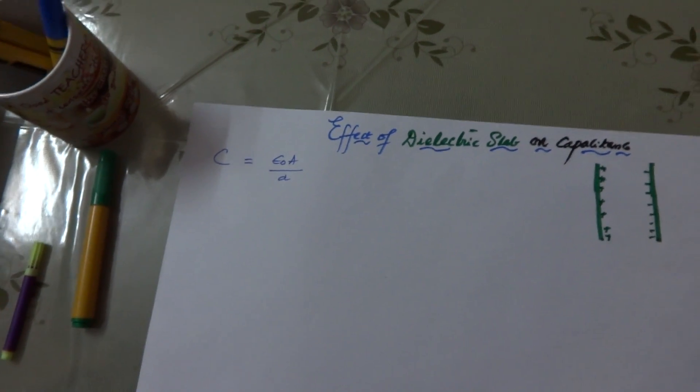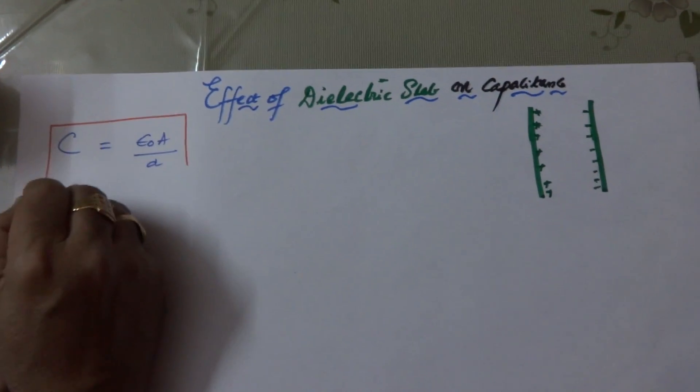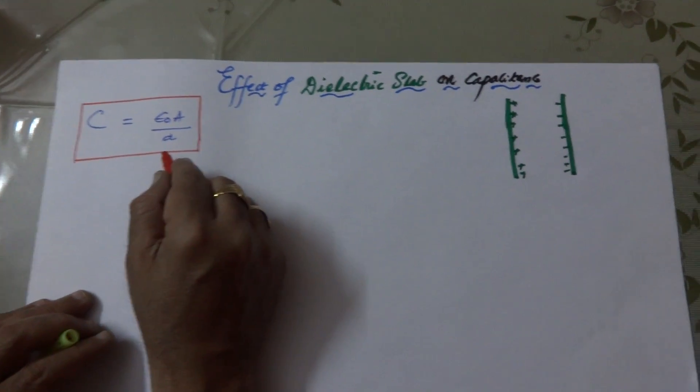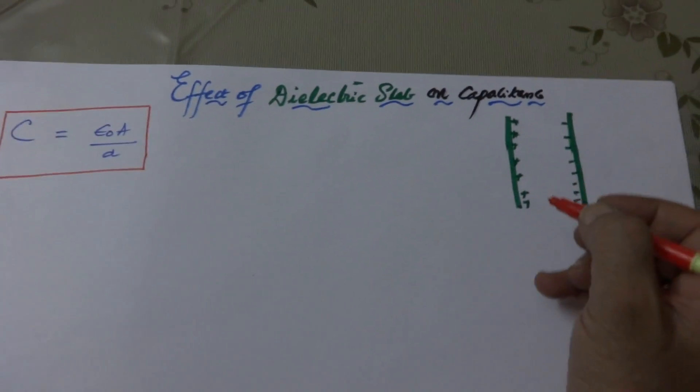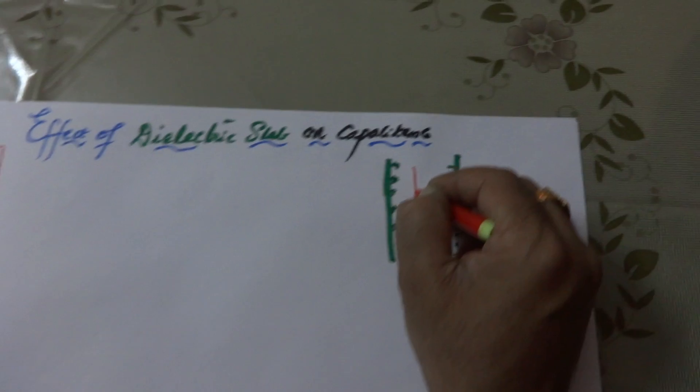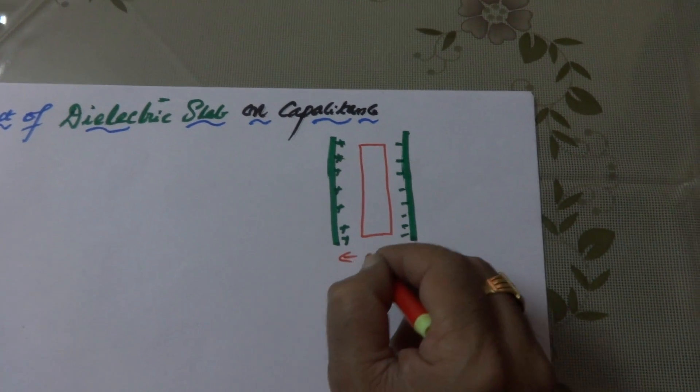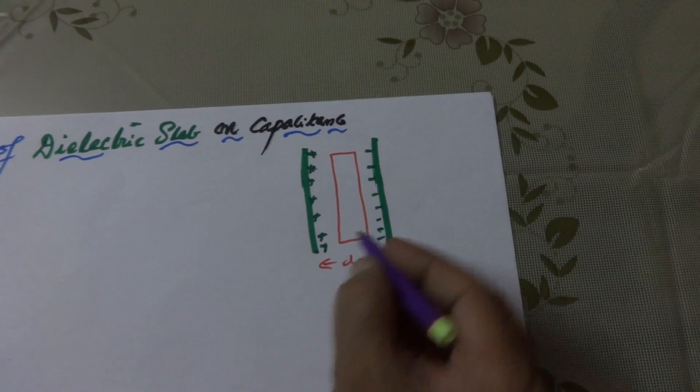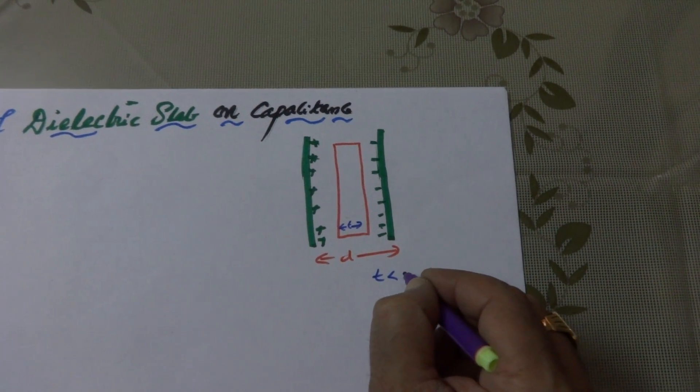Here we know that A is the area of the plates of the parallel plate capacitor, d is the distance between the two plates and C is the capacitance, ε0 is the permittivity of the vacuum. If we introduce a dielectric slab of thickness t, so it is needless to mention that t is less than d.